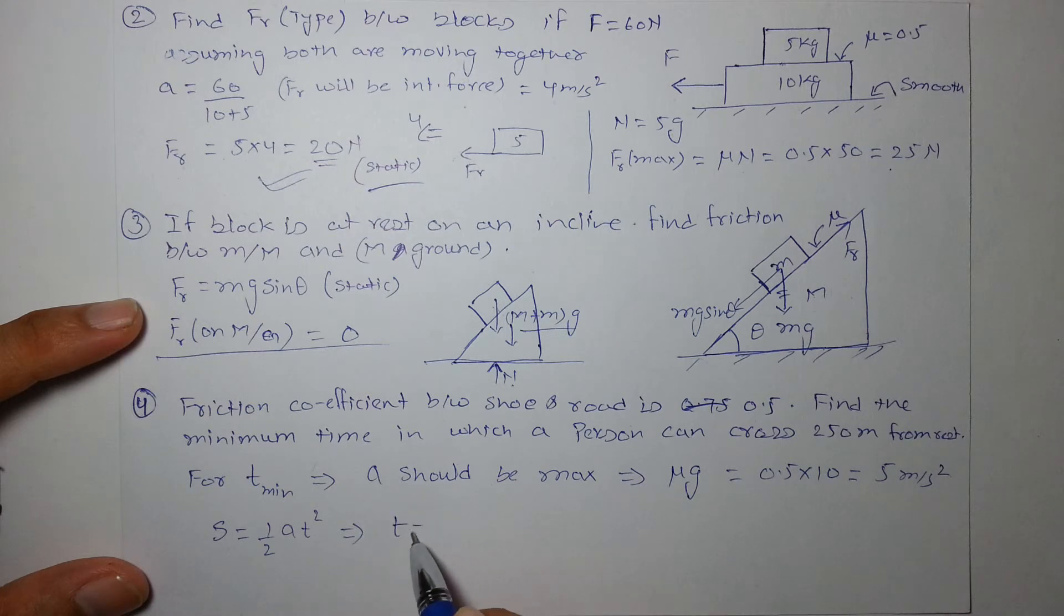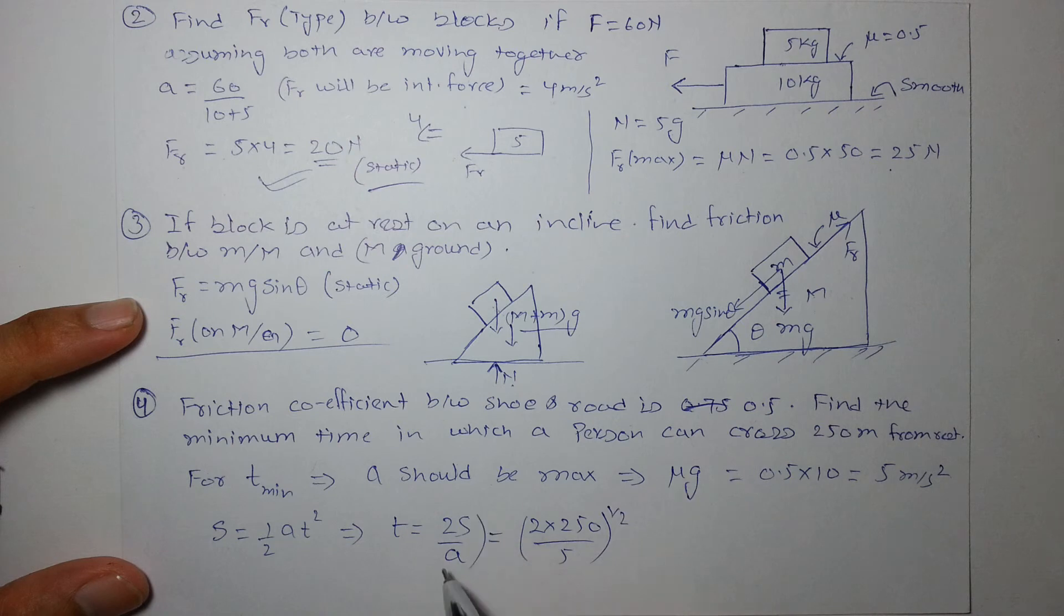T is nothing but square root of 2S by A, so 2 into 250 by 5 and root of that, that is nothing but 500 by 5 which is 100, root of that is 10, 10 seconds.